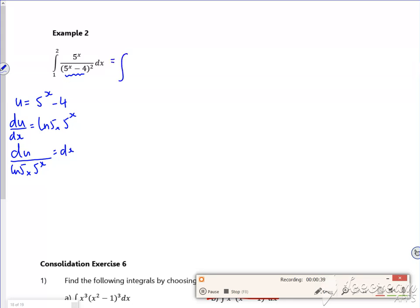So I've got 5 to the x at the start, this bit here is u, it's u squared on the bottom, so it becomes u to the minus 2. So I'm happy with that, u squared on the bottom becomes u to the minus 2. Then I'm multiplying that by du over log 5 times by 5 to the x.